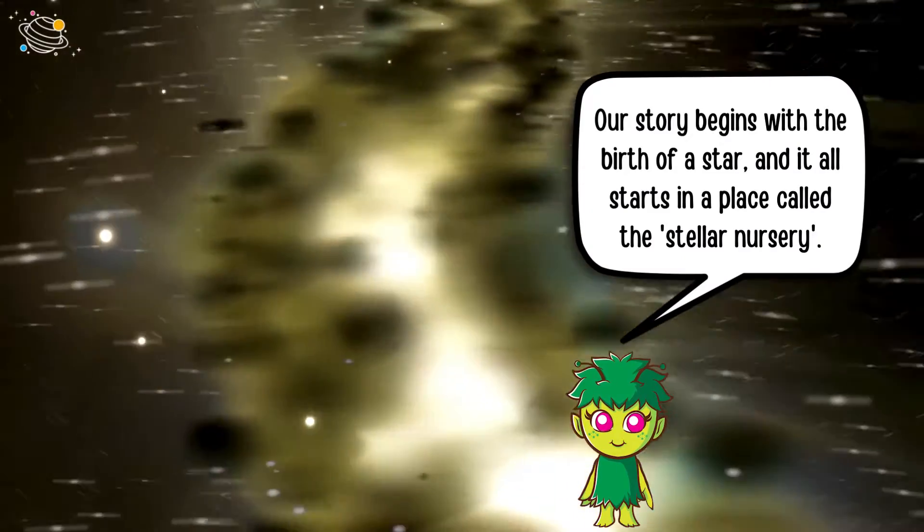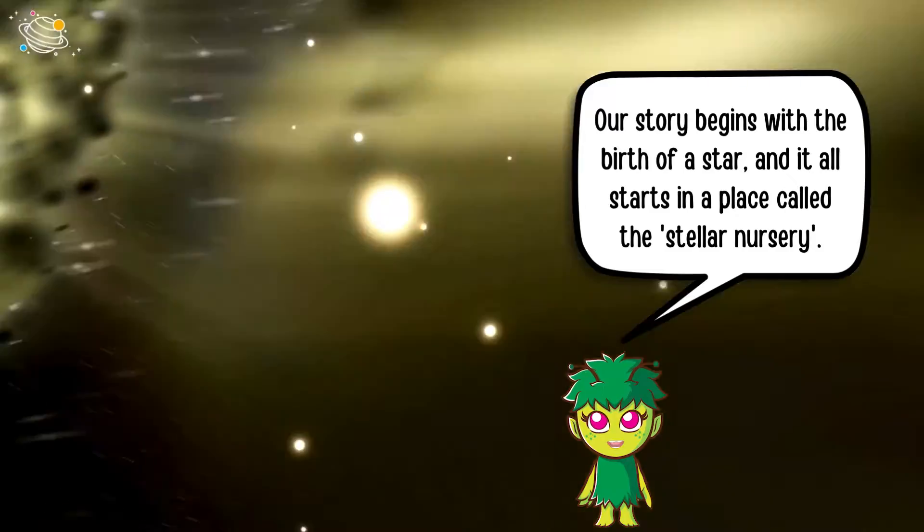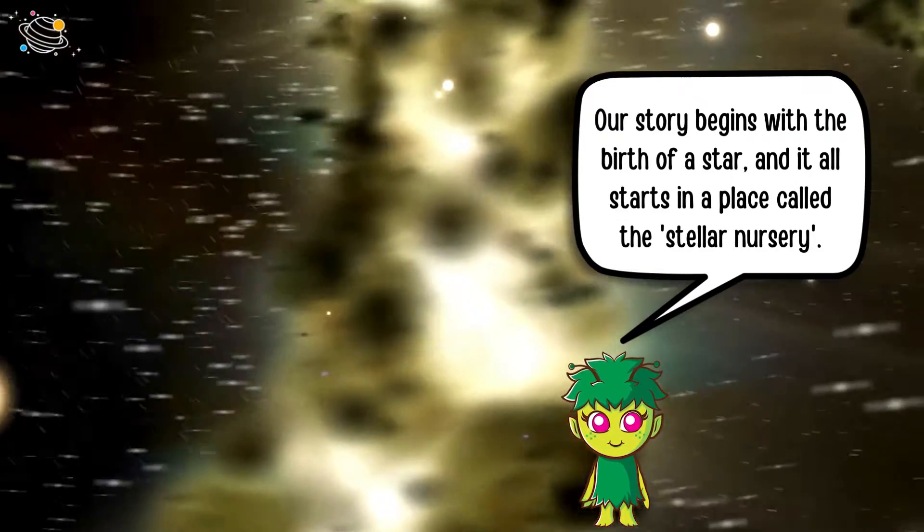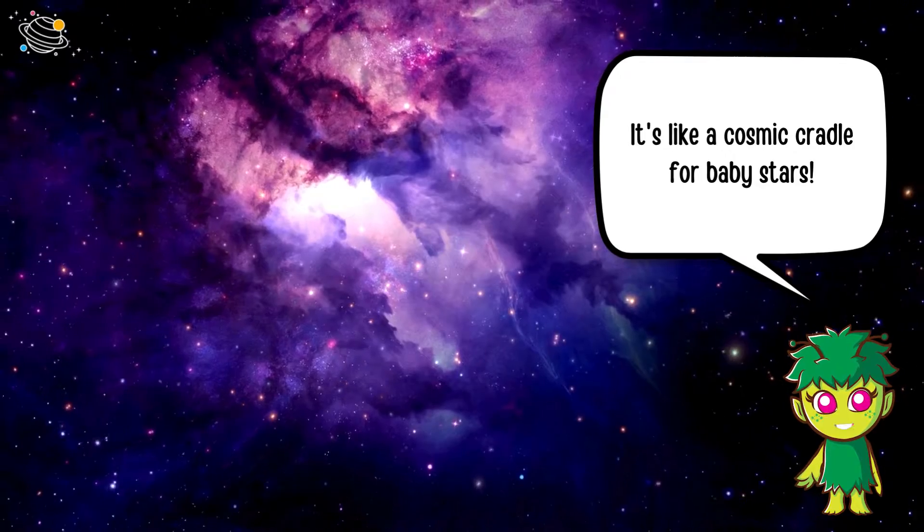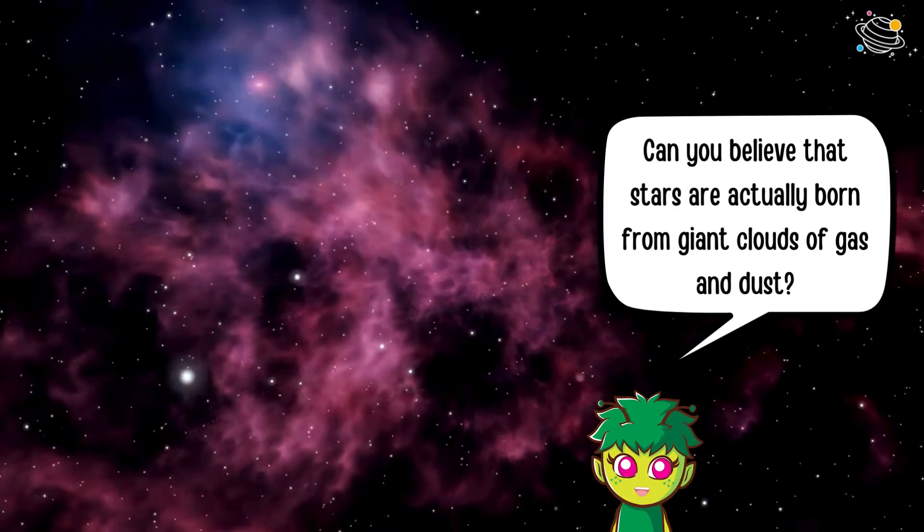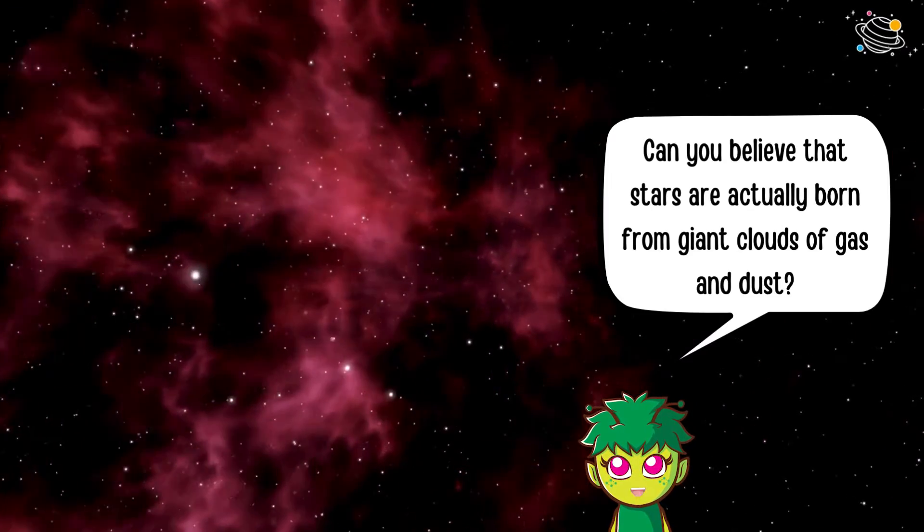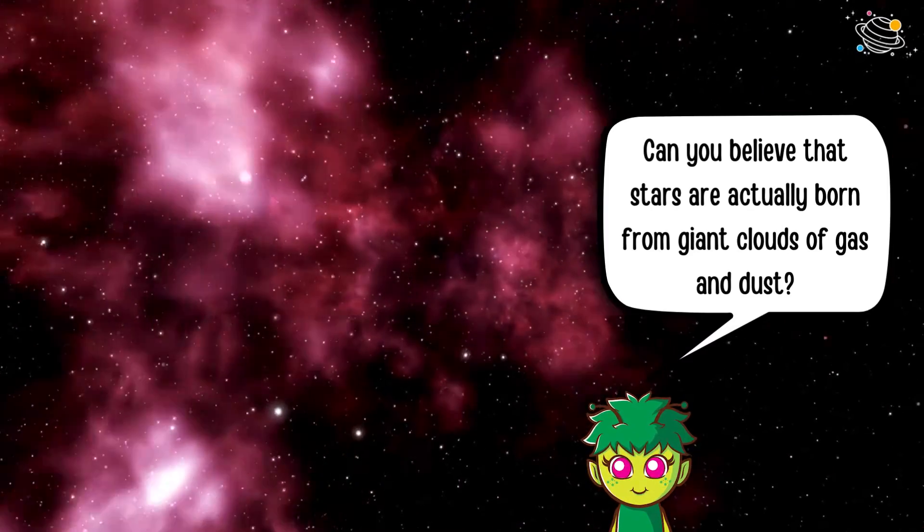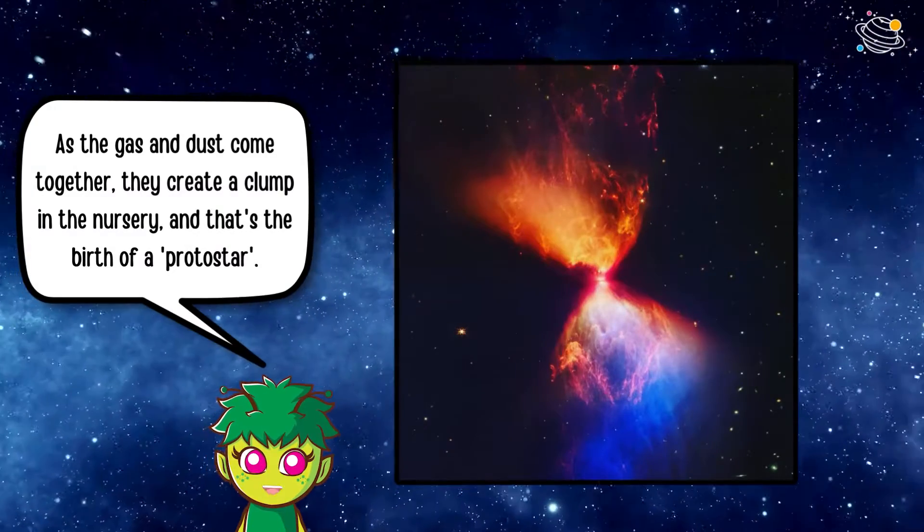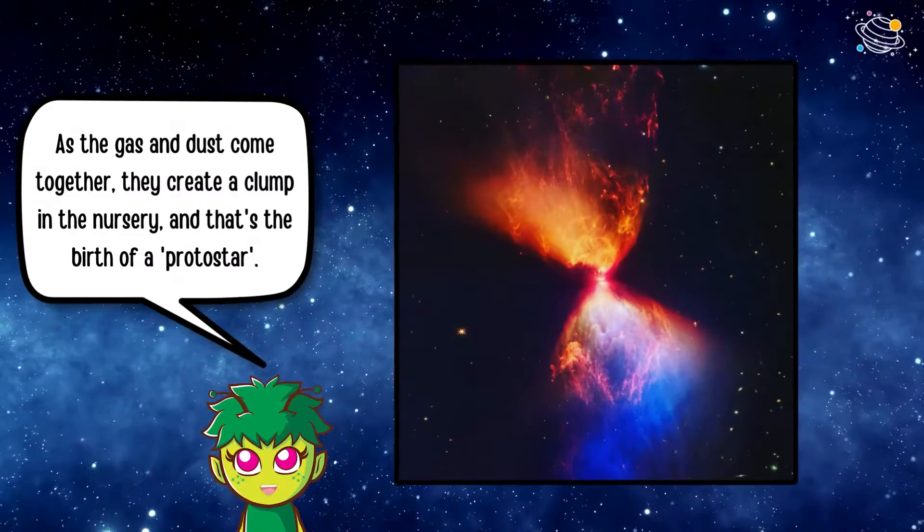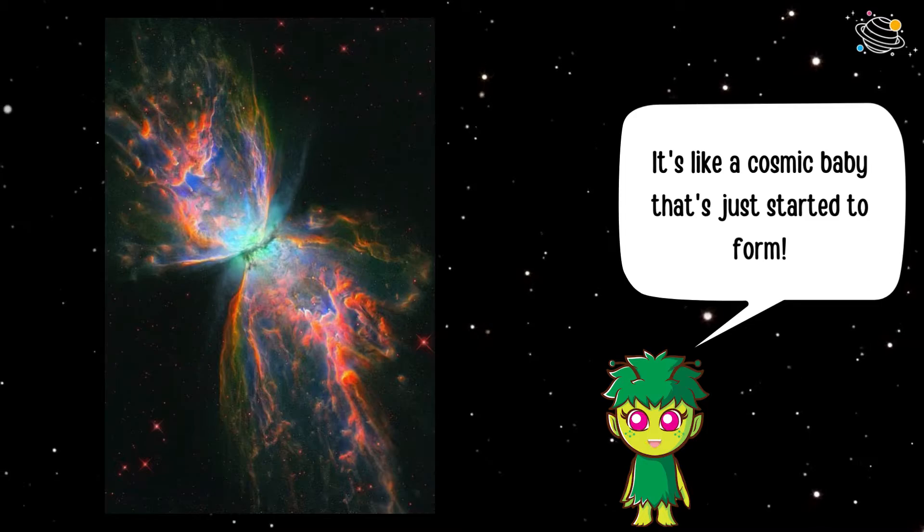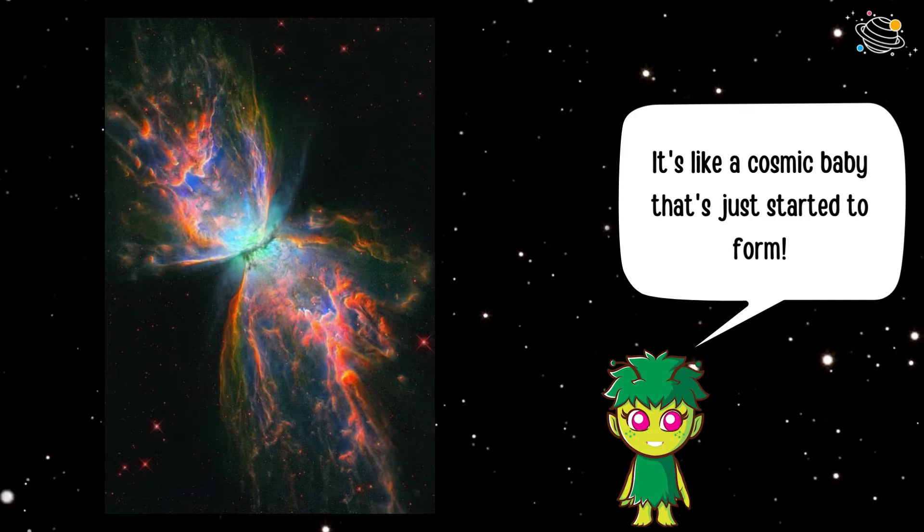Our story begins with the birth of a star, and it all starts in a place called the stellar nursery. It's like a cosmic cradle for baby stars. Can you believe that stars are actually born from giant clouds of gas and dust? As the gas and dust come together, they create a clump in the nursery, and that's the birth of a protostar. It's like a cosmic baby that's just started to form.